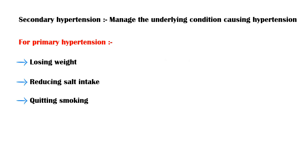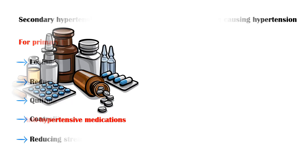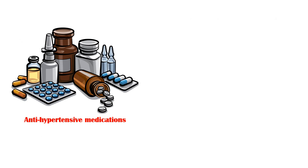Quitting smoking, controlling diabetes, and reducing stress are also recommended. Along with lifestyle modifications, antihypertensive medications may be indicated. A single antihypertensive medication at standard dose is adequate to control mild hypertension. However, those with moderate or worse hypertension invariably require several drugs in combination.